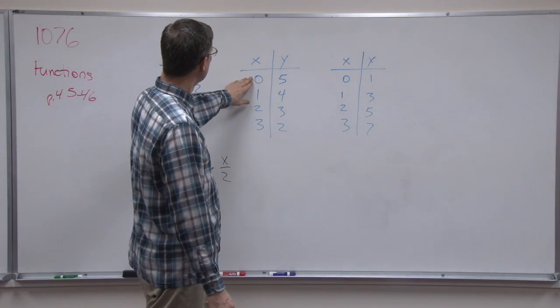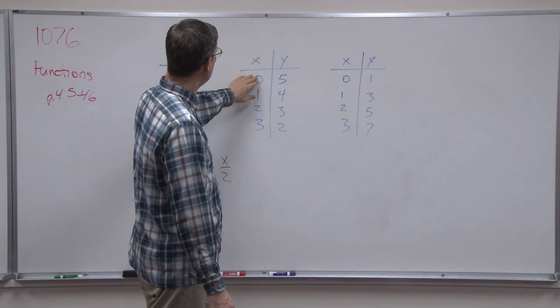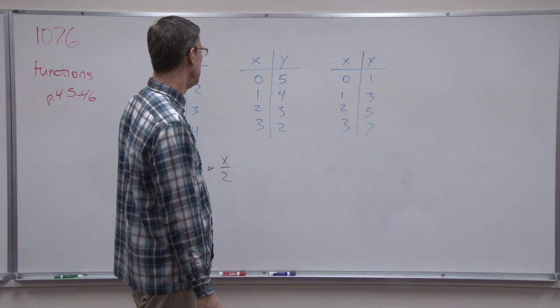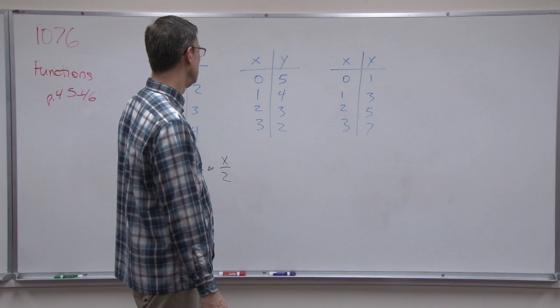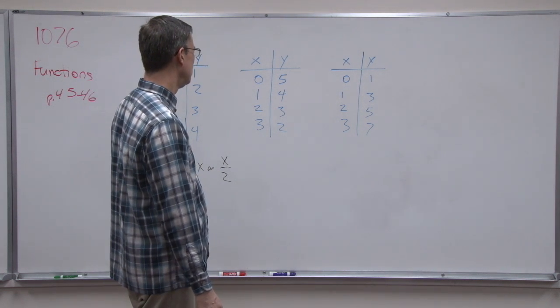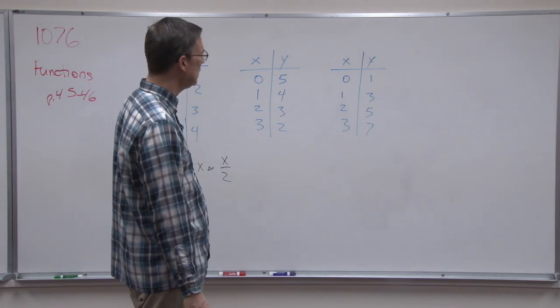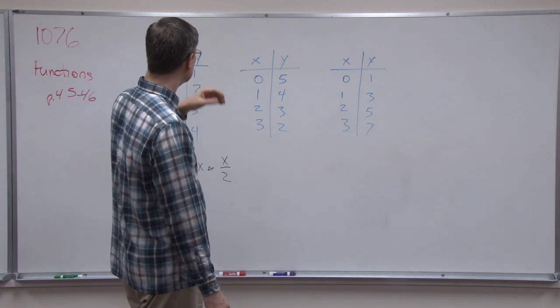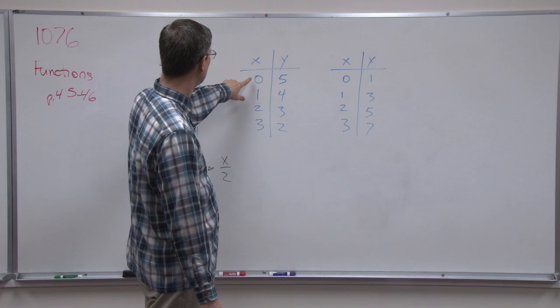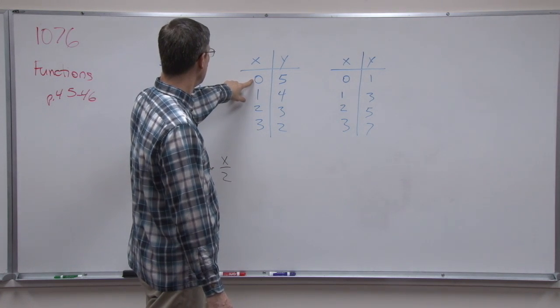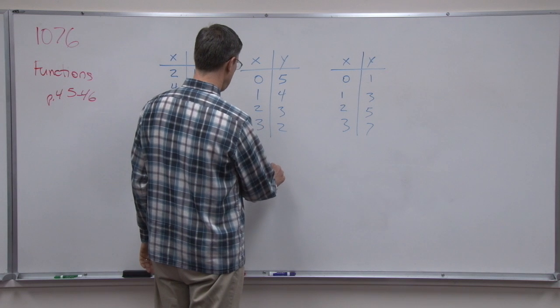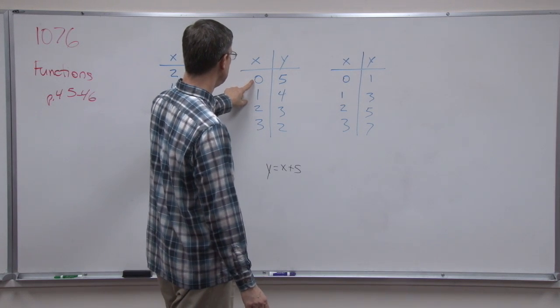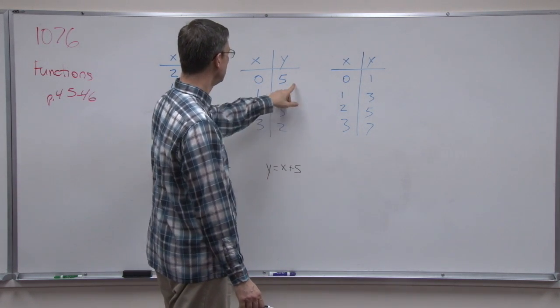Now this one looks a little more difficult. This one says if I plug in 0, I'm supposed to get 5. If I plug in 1, I'm supposed to get 4. Plug in 2, and I'm supposed to get 3. Plug in 3, and I'm supposed to get 2. So what if I said y equals x plus 5? That would work here, wouldn't it? 0 plus 5 equals 5.